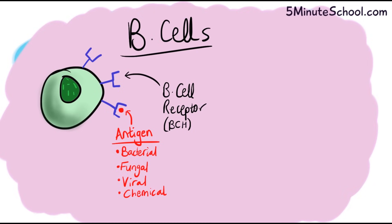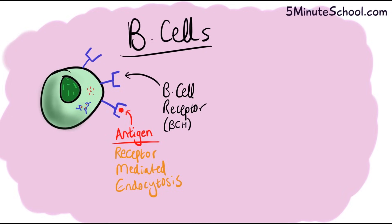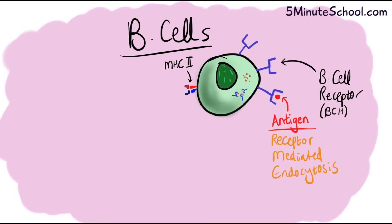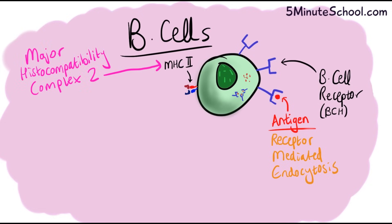Once an antigen is bound onto the B cell receptors, the antigen is engulfed into the B cell in a process called receptor-mediated endocytosis. The B cell then breaks down the antigen, and the breakdown products are placed on the surface of the B cell in a special molecule called a major histocompatibility complex — specifically the class 2 MHC, which is present on B cells.